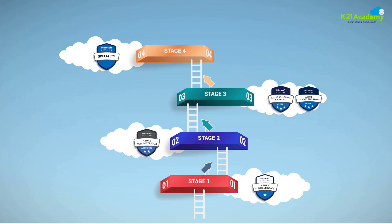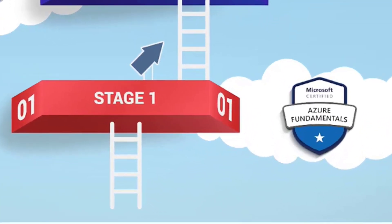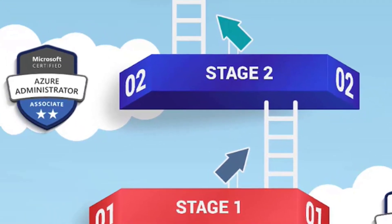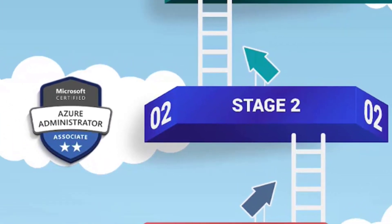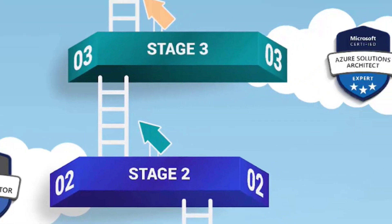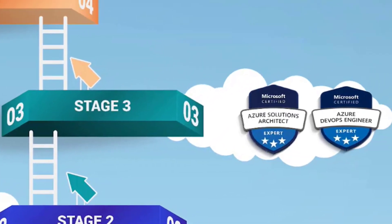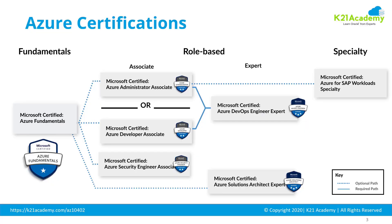In that training, she first starts with role-based certifications available for Azure Cloud, right from Azure Fundamentals — that's AZ-900 — then Azure Administration, which is AZ-104, earlier AZ-103. Then other level three certifications covering DevOps, which is AZ-400, or Solution Architect, which includes two certifications: AZ-300 and AZ-301.